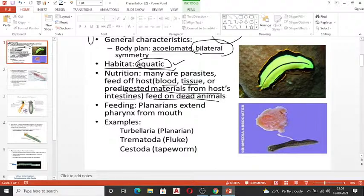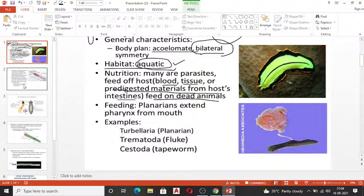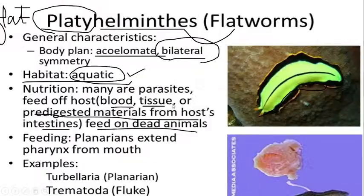For classification, Platyhelminthes are divided into three classes: Turbellaria — example is planarian; Trematoda — which includes liver fluke and blood fluke; and Cestoda — tapeworms, including Taenia solium found in pork, Taenia saginata found in beef, and Echinococcus granulosus found in dog meat.